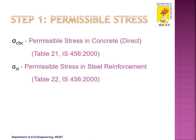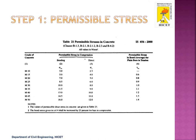First, we need to find the permissible stresses, that is sigma CBC and sigma ST. Sigma CBC is the permissible stress in concrete and sigma ST is the permissible stress in steel reinforcement. These two values are available in Table 21 and Table 22 of IS456-2000. As per Table 21, for M20 grade of concrete, the permissible stress in concrete is 7 N/mm².